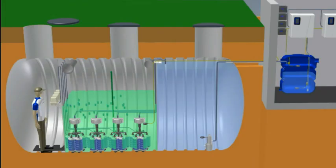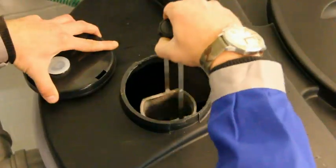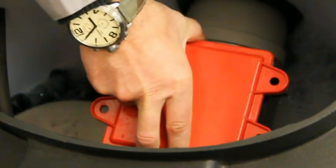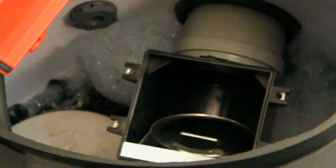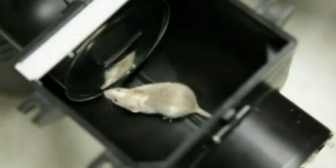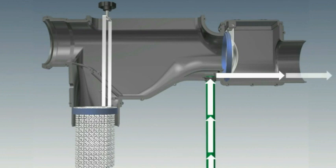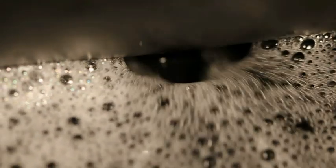The Aqua Loop pre-filter fulfills several functions. Primarily, debris particles are retained in the filter basket. The non-return valve prevents backflow water, small animals, and mosquito larvae from entering the storage tank. The bottom sediment is automatically extracted with each overflow of the tank through a suction overflow.